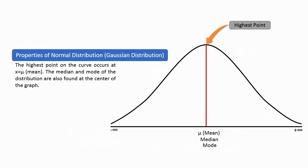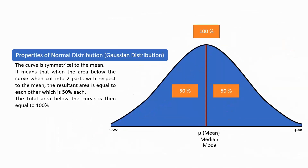Another property: the highest point on the curve is at x equals mu, or the mean. The mode and the median of the distribution are also found at the center of the graph. This indicates that in a normal distribution, the mean, median, and mode are equal. The curve is symmetrical to the mean — when the area below the curve is cut into two parts with respect to the mean, each resulting area is equal to 50%. The total area below the curve is then equal to 100%.